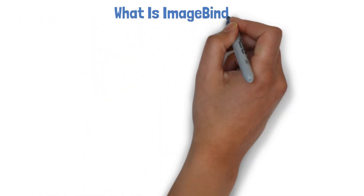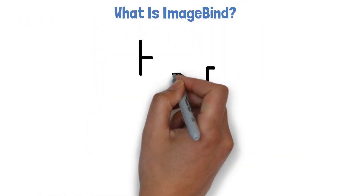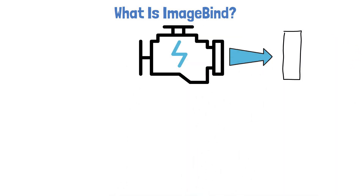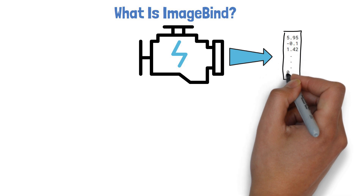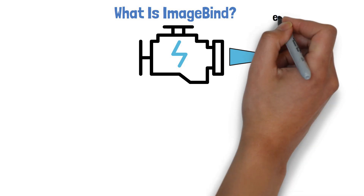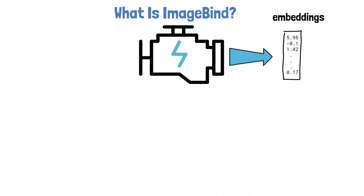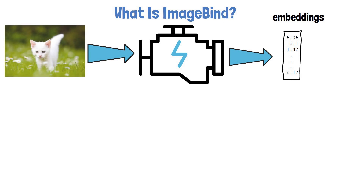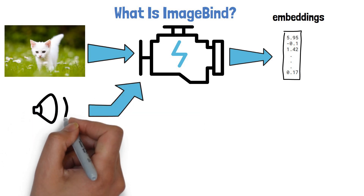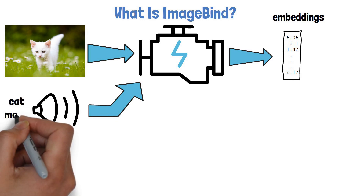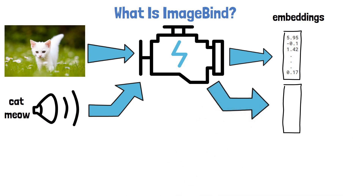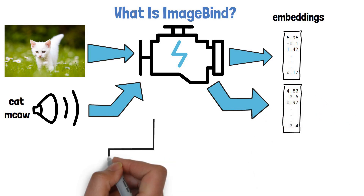Let's start with what is ImageBind. At the most simple level, ImageBind is a model that yields vectors of numbers, which are called embeddings. This embedding captures the meaning of the model inputs. The cool thing about ImageBind is that we can provide it with various input types — so in addition to a cat image, we can also provide an input of a cat's sound, and the model will also yield a vector of embeddings.